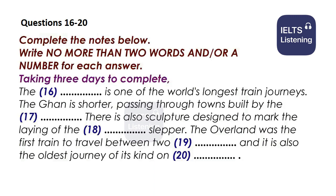Some travellers prefer the longer journeys on offer in Australia. The Indian Pacific travels from Sydney to Perth — dubbed 'the adventure that spans Australia' — with three nights on board, taking in the Blue Mountains and the Nullarbor Plains, and as the name implies, showing you two oceans. This journey holds two world records: covering 4,352 kilometres, it is one of the world's longest train journeys, and it also travels the world's longest straight stretch of railway track at 478 kilometres.